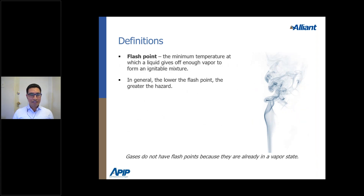Flashpoint is the temperature where the liquid gives off enough vapor to form an ignitable mixture. With flammable and combustible liquids, it's not the actual liquid that ignites — it's the vapor. Once that liquid reaches its flashpoint and starts releasing vapor, that's the point where the vapor could possibly combust.